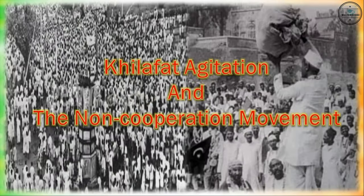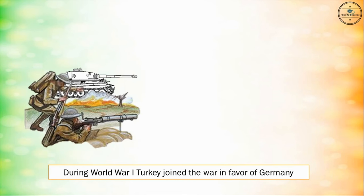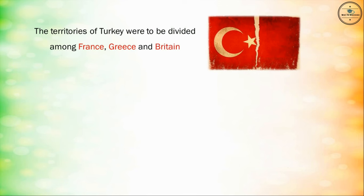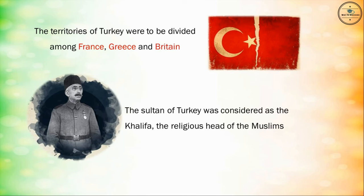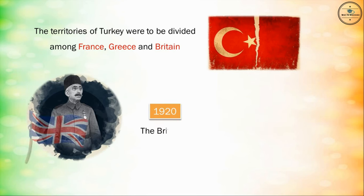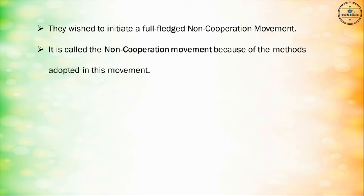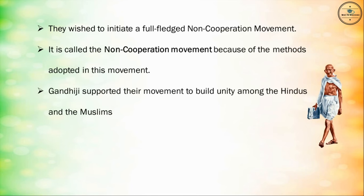The Khilafat movement and the non-cooperation movement were organized to oppose British rule in India. During the First World War, Turkey joined the war in favor of Germany. Turkey and Germany lost the war, and the territories of Turkey were to be divided among France, Greece, and Britain. The Sultan of Turkey was considered as the Khalifa, the religious head of the Muslims. In 1920, the British imposed a harsh treaty on the Turkish Sultan, which enraged the Muslims. The Khilafat agitation started under the leadership of Muhammad Ali and Shaukat Ali. They formed the All-India Khilafat Committee and wished to initiate a full-fledged non-cooperation movement. Gandhiji supported their movement to build unity among Hindus and Muslims.